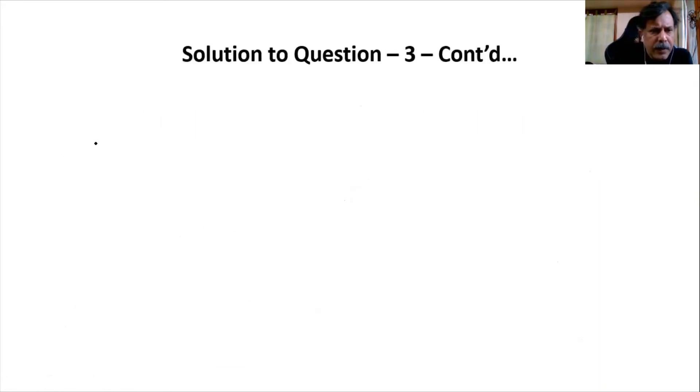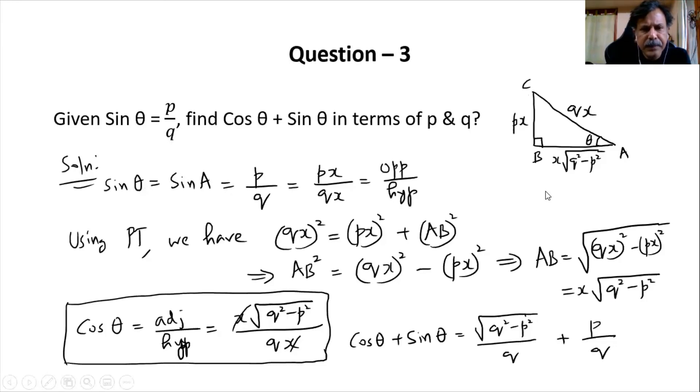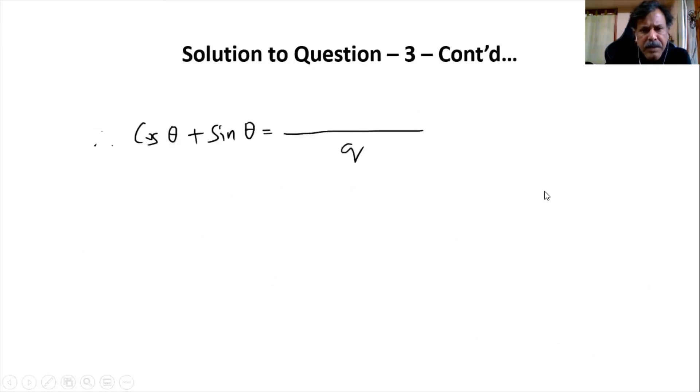Therefore, cos θ plus sin θ is equal to—we'll have to write a common denominator, which is q, and the numerator is p plus square root of q square minus p square. That's the answer for it.